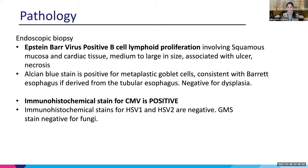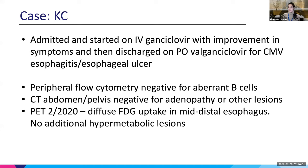When looking at this — EBV B-cell proliferation, the first thing that comes to mind is PTLD. And then there's also the CMV. She was actually admitted because she was doing so poorly. She was started on IV ganciclovir and actually had some improvement in her symptoms, but this was really treating the CMV part of it. She was also on oral valganciclovir when she was discharged.